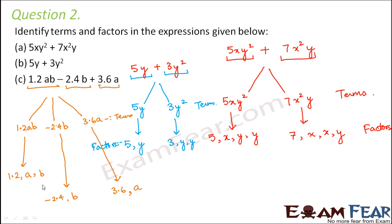This type of representation of terms and factors is called the tree representation, because the terms and factors are represented like the branches of a tree. You have one main branch, from which two branches emerge, and from those branches further branches emerge, segregating terms and factors in a similar way.